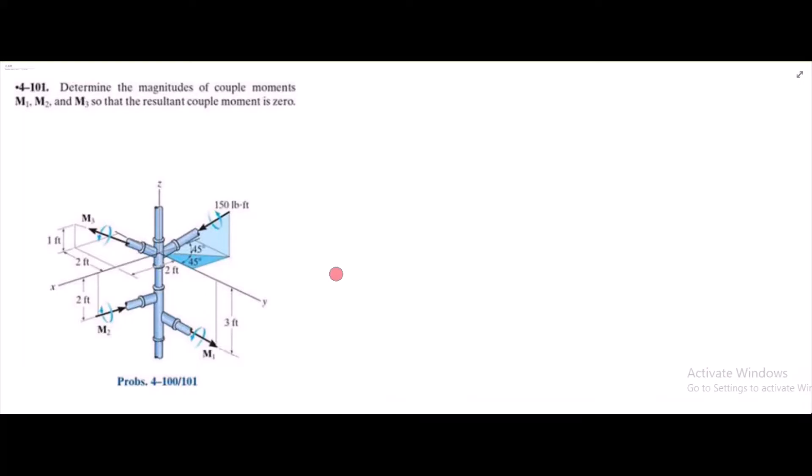Hi, welcome to the solutions manual. In this video, we will solve problem 4-101 from R.C. Hibbeler Engineering Statics 12th edition. According to this problem, we have to determine the magnitude of couple moments M1, M2, and M3 so that the resultant couple moment is zero.